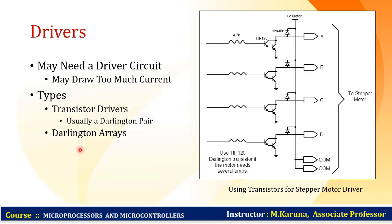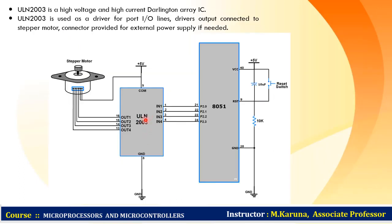The transistor driver circuit is used in the case of microprocessor interfacing with a stepper motor. ULN2003 is a high voltage and high current Darlington array IC, known as a driver circuit, which is used as a driver for port I/O lines. The driver output is connected to the stepper motor, and a connector is provided for external power supply if needed.